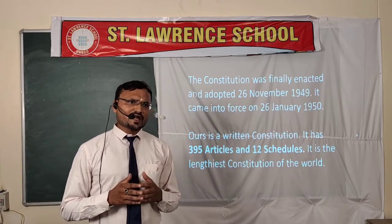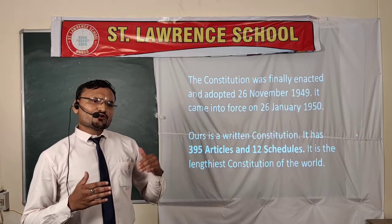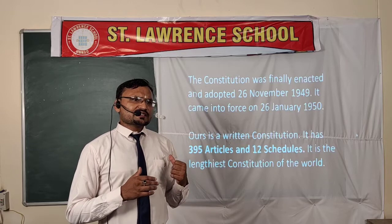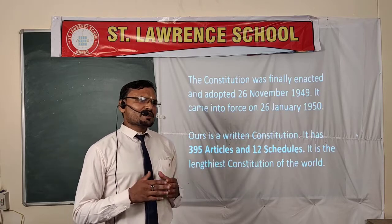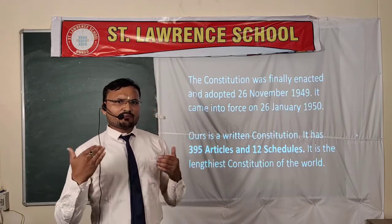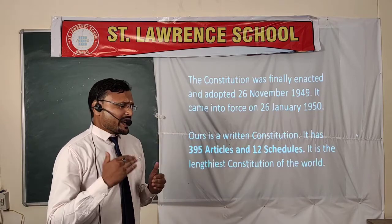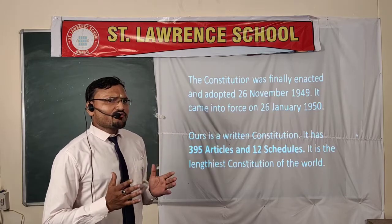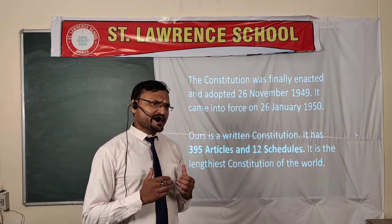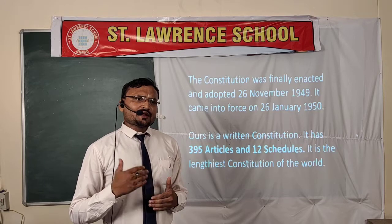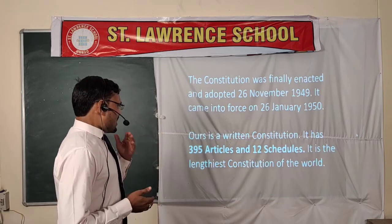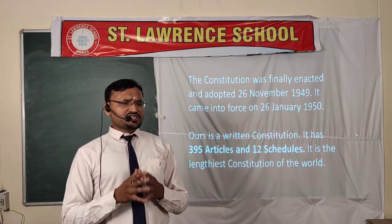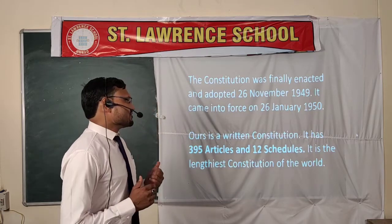There is a story about why two months were taken to enforce the Constitution of India. Because in 1930, 26 January was declared by the Congress that until we get complete freedom from the British, every year we would celebrate 26 January as a Freedom Day of India. So this day was chosen to declare India a Republic. Our Constitution has 395 articles and 12 schedules.